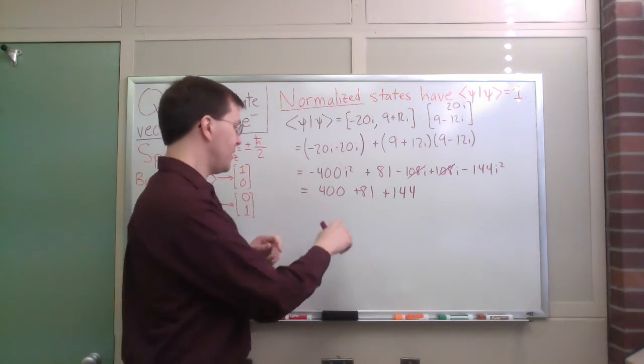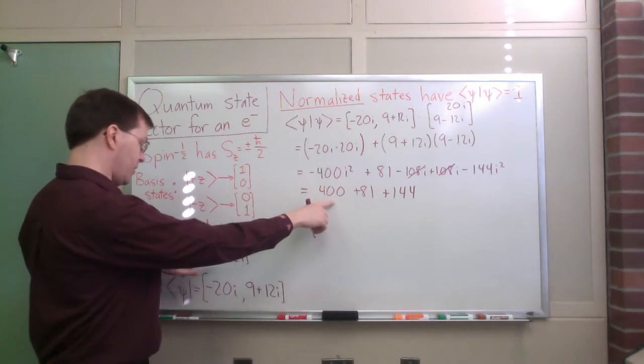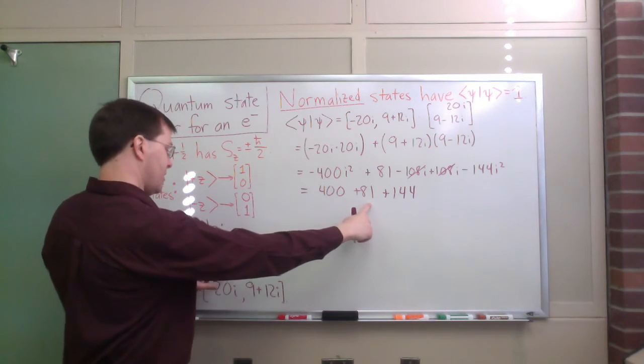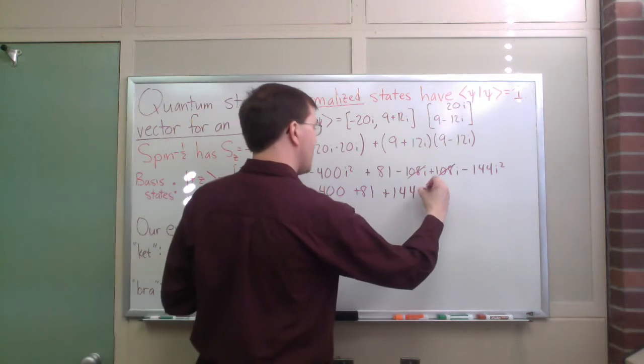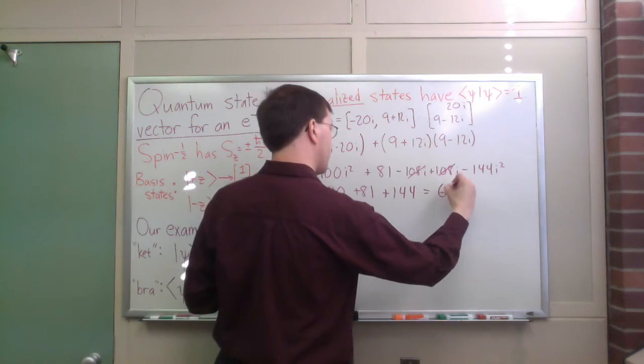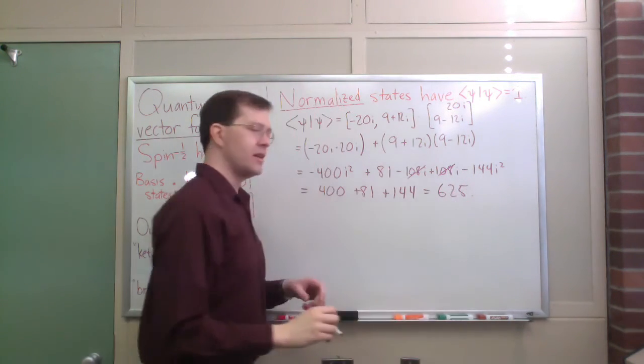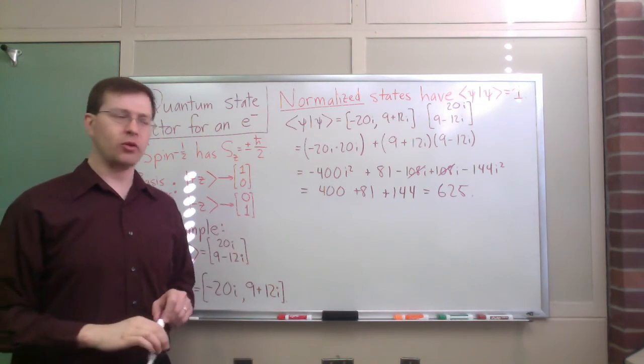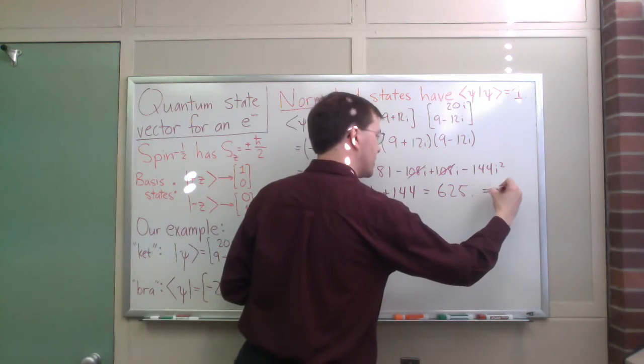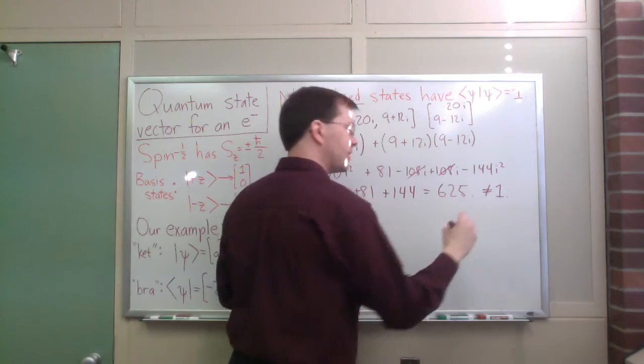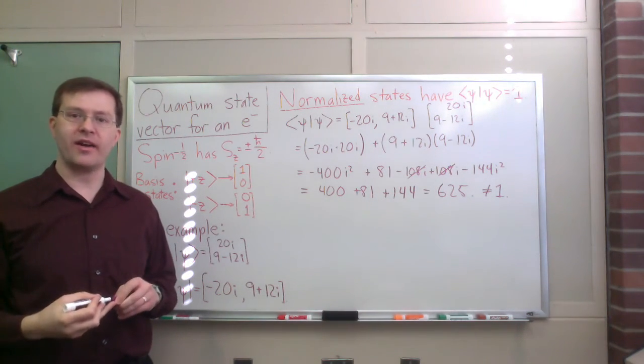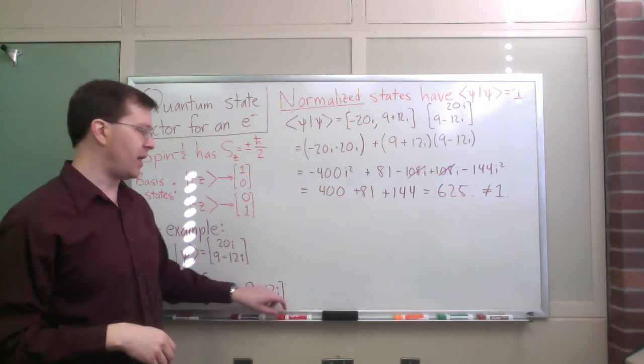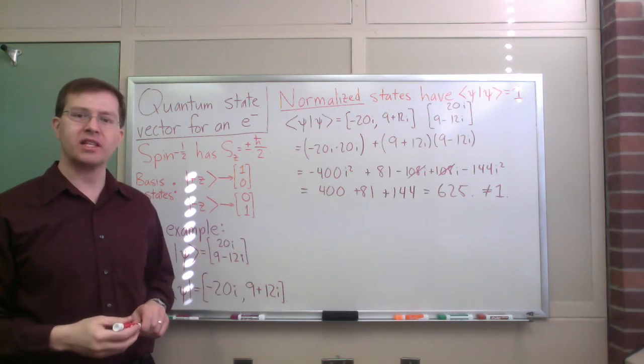In fact, this is 20 squared, plus 9 squared, plus negative 12 squared. You can do that too. This adds up to 625. So clearly this is not equal to 1. This is not a normalized quantum state vector. So what can I do to normalize it? How can I make this a normalized vector?